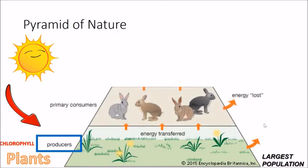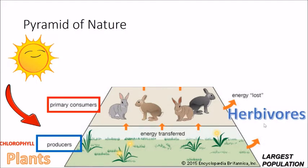Moving up the pyramid, we have the primary consumers. The primary consumers are actually herbivores, which means they eat plants only.